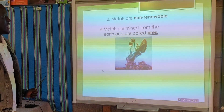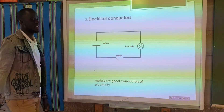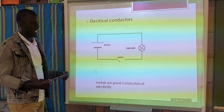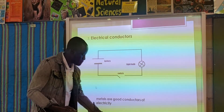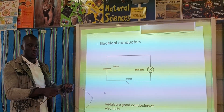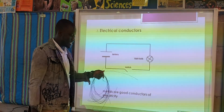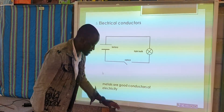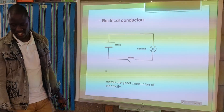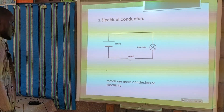Metals are mined from the earth and are called ores. The third property of metals is that they are electrical conductors. When we talk about electrical conductivity, we talk about the ability for electricity — the flow of electrons — to move through them. If it allows electricity to move from one end to another, it has the property of electrical conductivity. Think about where copper wires are used in electrical circuits — we'll talk more about that when we get to the topic of electrical circuits.